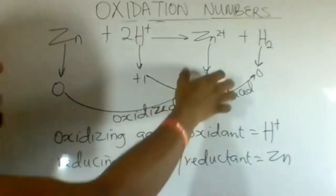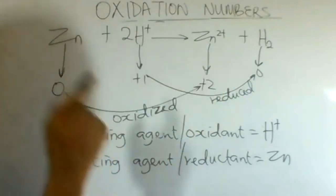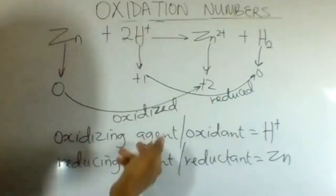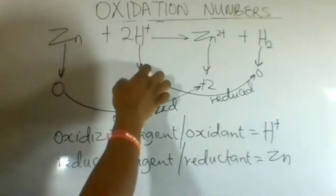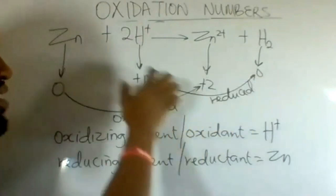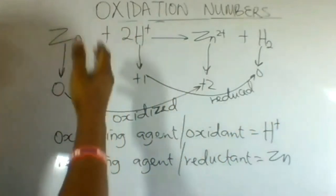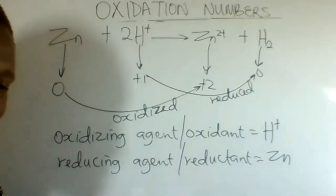The substance that increased in charge is oxidized, and what caused the oxidation is the oxidizing agent. The substance that decreased in charge is reduced, and what caused the reduction is the reducing agent or the reductant.